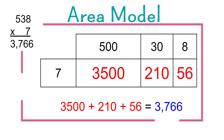Here's another way we multiply — we can use the area model. For the area model, you make a table or grid and take one of the factors and break it out by place value. With a three-digit number multiplied by a one-digit number, you can actually break both numbers out by place value, showing how you get each partial product and then adding them together to get your full product.